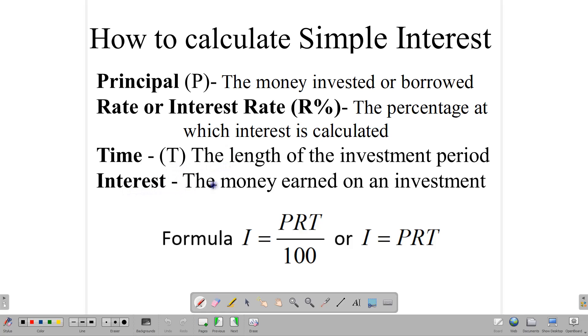And the interest, of course, is the money that you either earn on your investment or the money that you're charged as a cost of borrowing. So the formula that we use for calculating simple interest is PRT, which means principal times rate times time, divided by 100. This is when we use the rate as a percentage over 100. And in some instances where the rate is written as a decimal, then the formula is simply interest is equal to PRT. In this version of the formula, the rate is given as a decimal. In this version of the formula, the rate is given in percentage form.